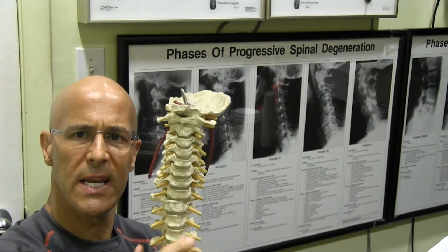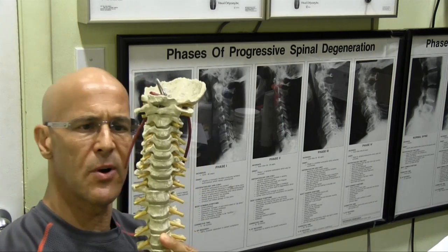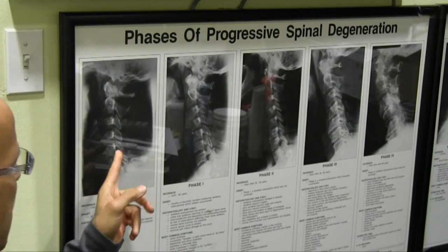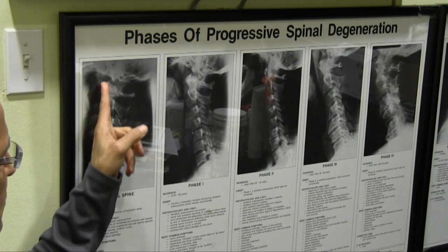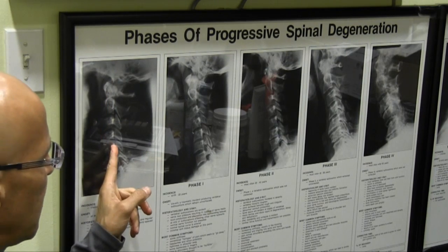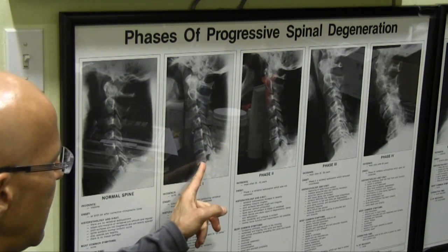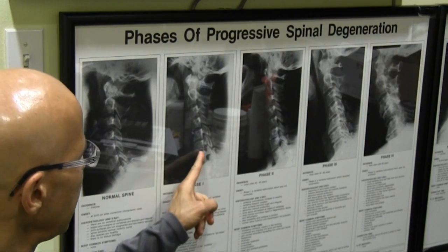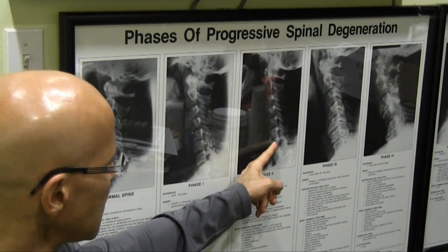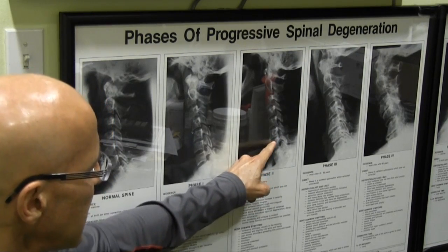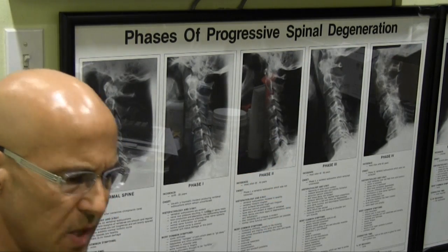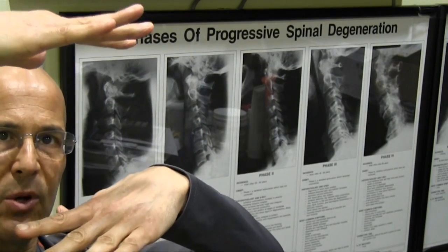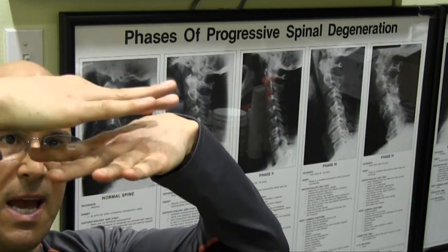I want to show you a couple of very important things. This is a normal curve right here — you have normal disc spaces, a normal curve. This is a beautiful neck. When the curve gets straighter, the discs are still intact but start to thin out a little bit, and as it continues into the next phase they start to degenerate. Generally what happens is the discs will degenerate kind of like an accordion, with the top and bottom of the neck coming together.